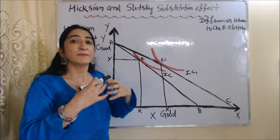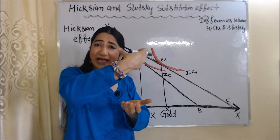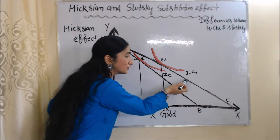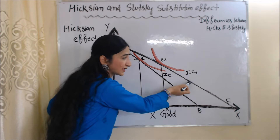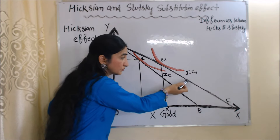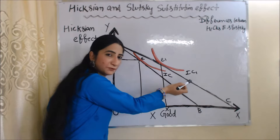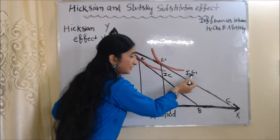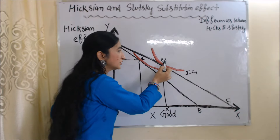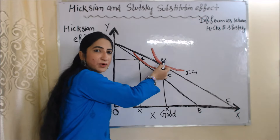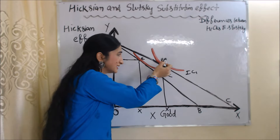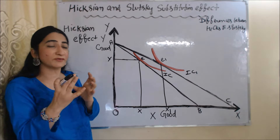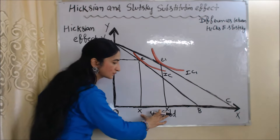Now, suppose the price of X falls. As the price of X falls, the budget line of the consumer shifts outward on the side of X. You can see the budget line has shifted outward on the side of X. Our new budget line is AC, the new indifference curve is IC1, and the new consumer equilibrium point is E1. At this new equilibrium point, the consumer has increased quantities of X good from OX to OX1.